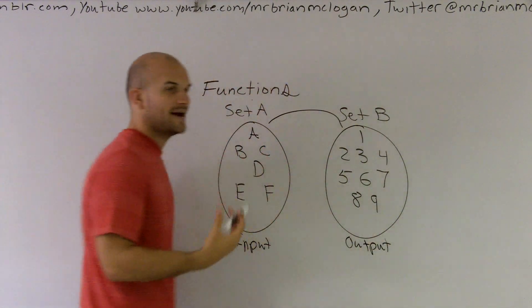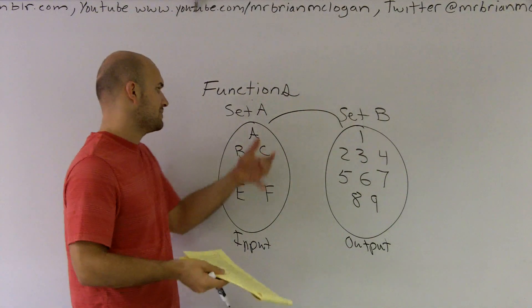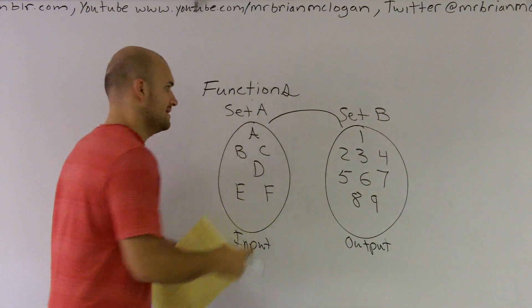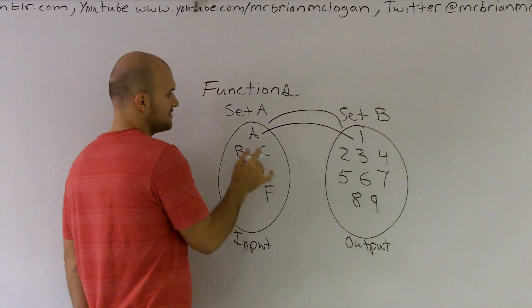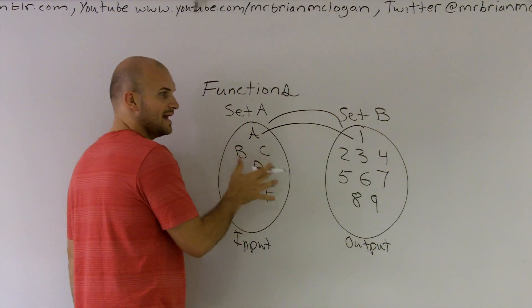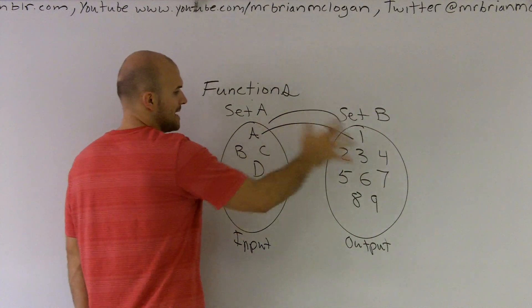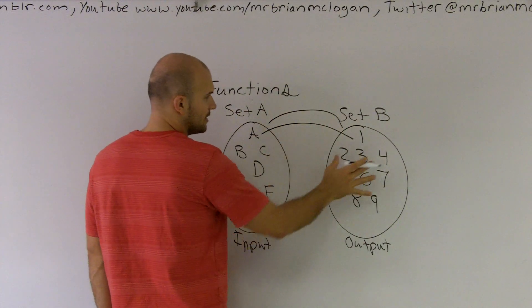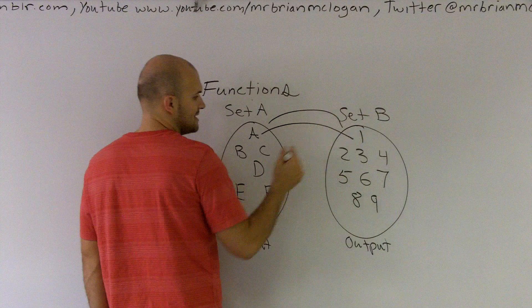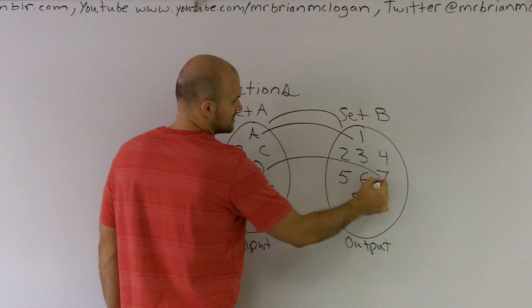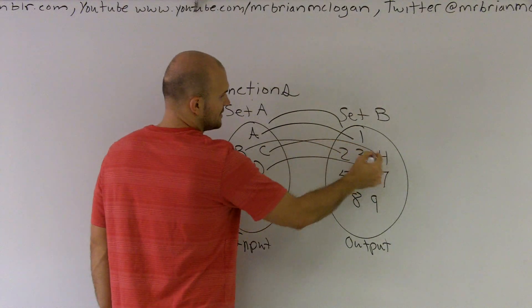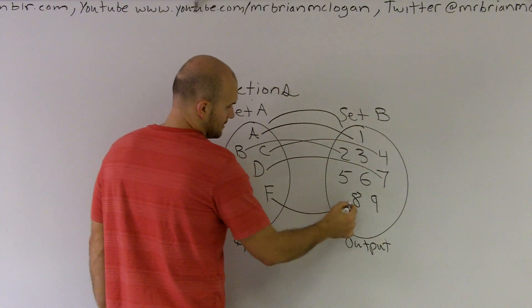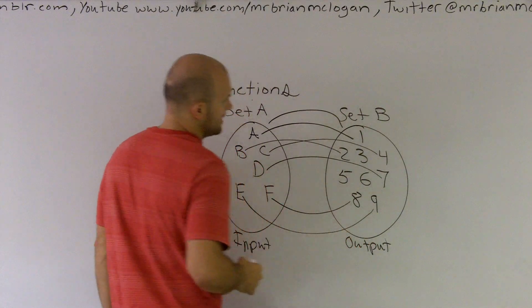What's happening in a function relationship is when I input, let's say A, my output is going to be 1. Each element in Set A maps through the function relationship to an element in Set B. So D goes to 7, B goes to 2, C goes to 4, F goes to 8, E goes to 9.